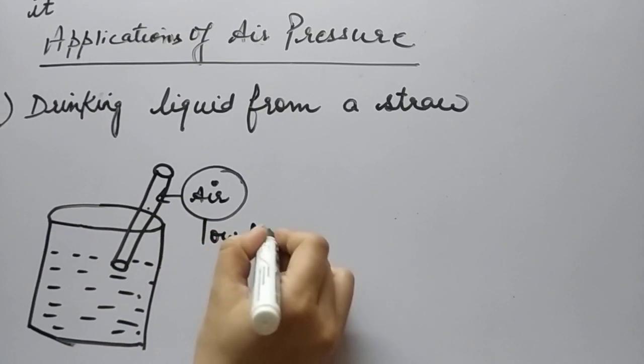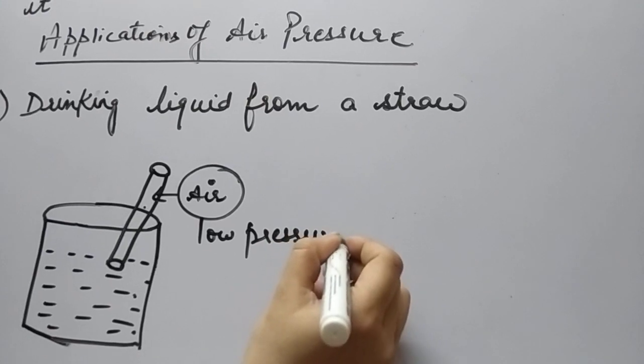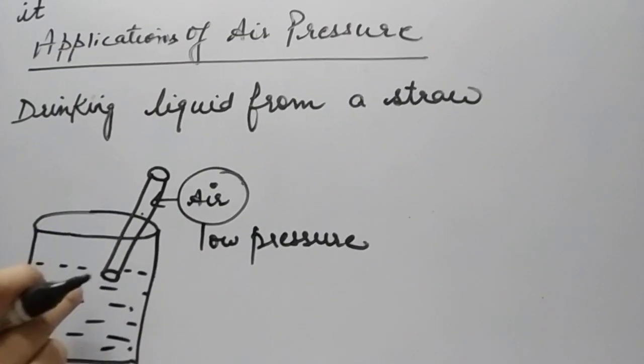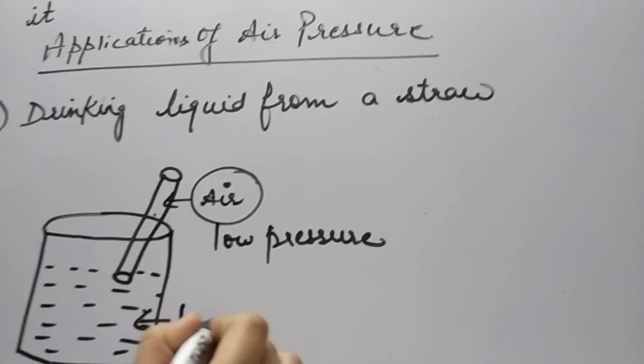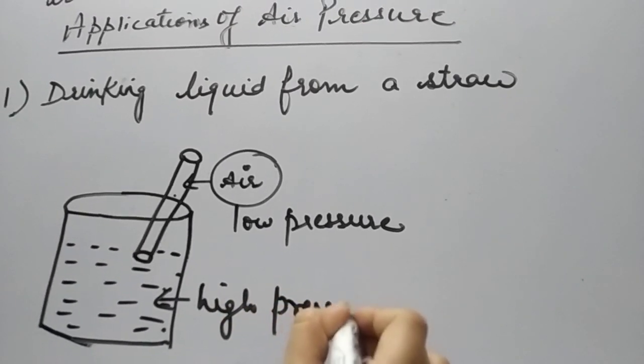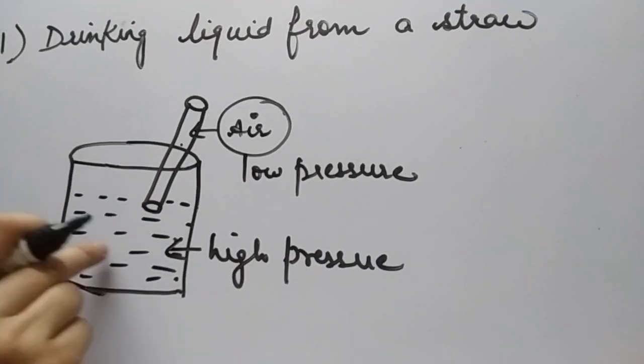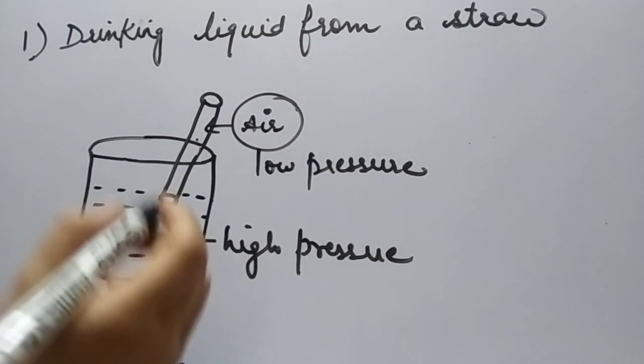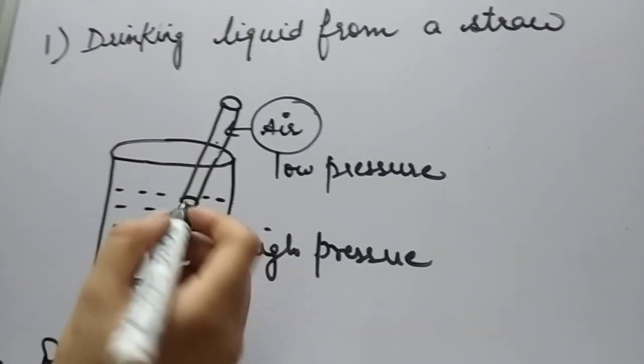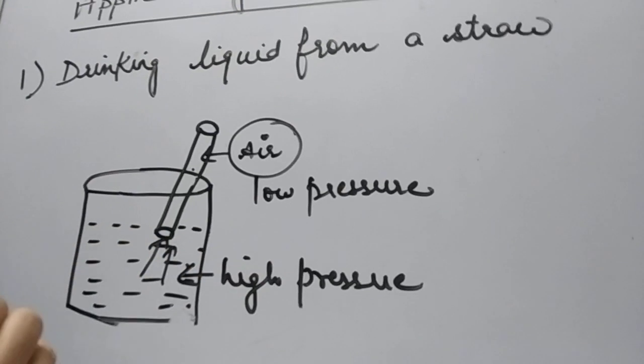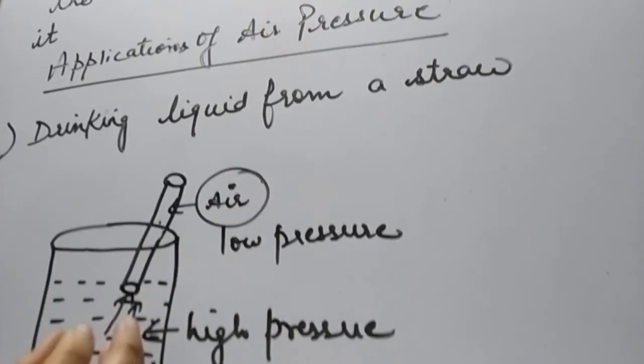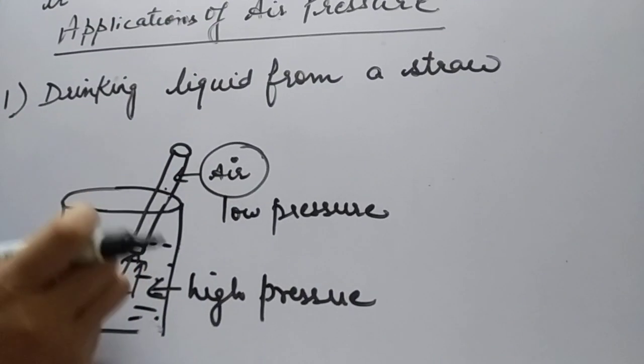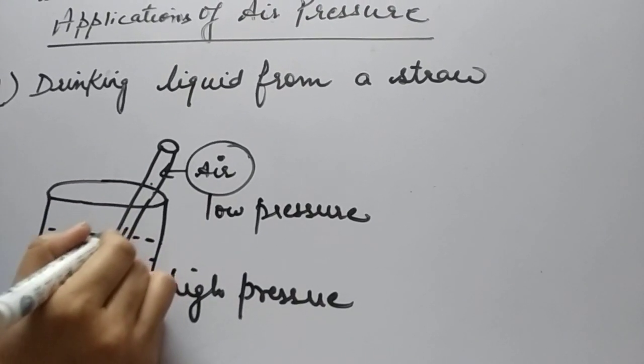There is a low pressure created inside the straw. Now what happens? The juice is at a high pressure here. But even though there is high pressure here and low pressure inside the straw, still any liquid cannot go against gravity. Anything has to go from high to low pressure but it has to go against gravity which is not possible. So there should be some applied force which can push this liquid into the straw.